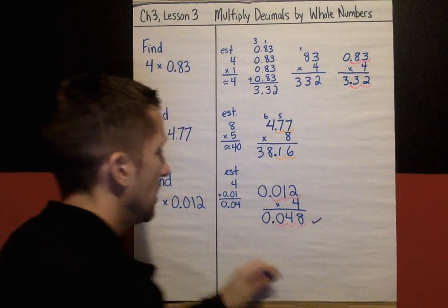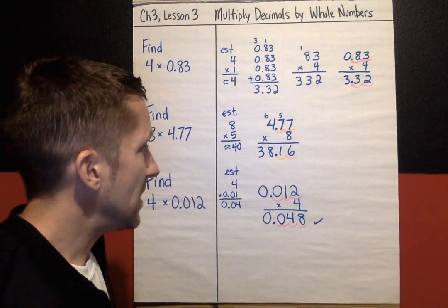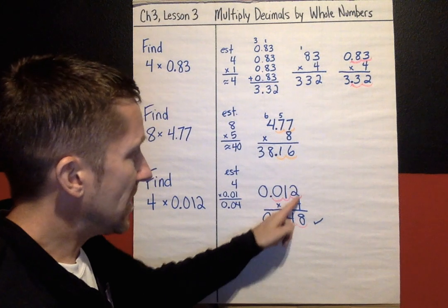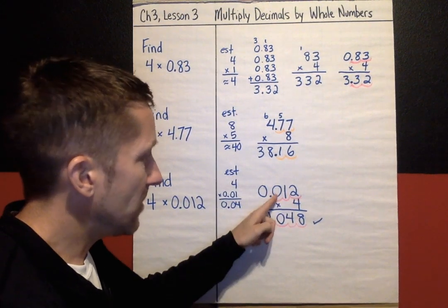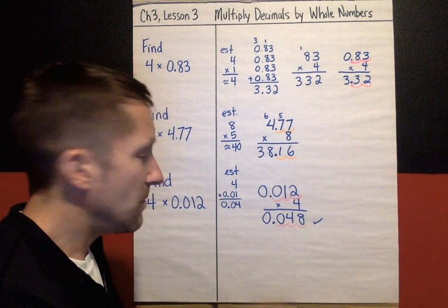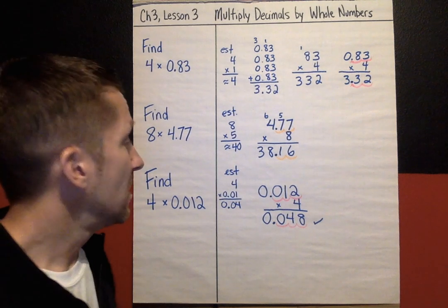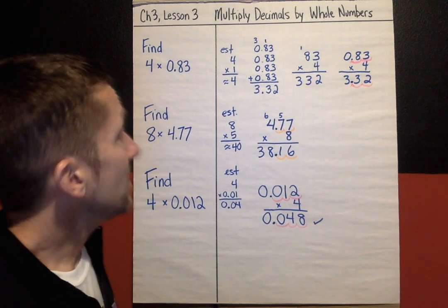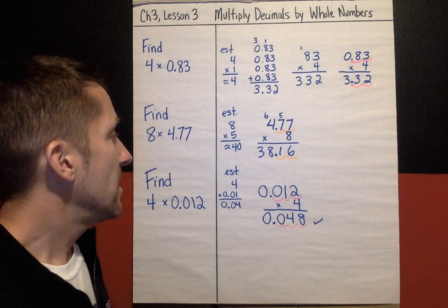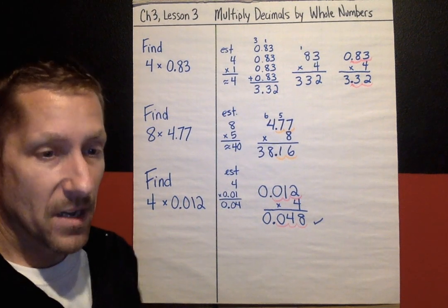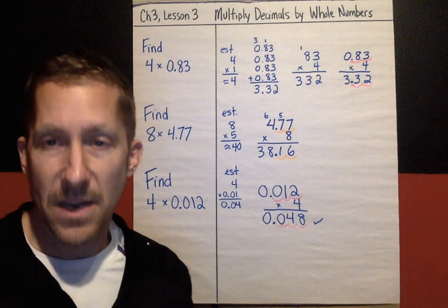So again, estimate if you can. See if your product fits the estimate. And also use the decimal jumps. Counting the decimal jumps. Same number of jumps in your factors, the decimal needs to be moved the same number of jumps in your product in the answer. So that is it for multiplying decimals by whole numbers. Hopefully, after you practice this today, you'll become a pro at it.